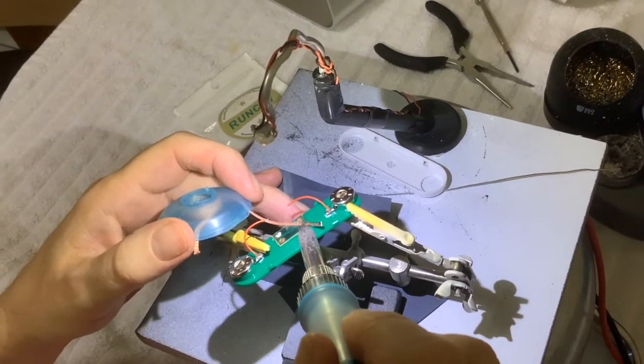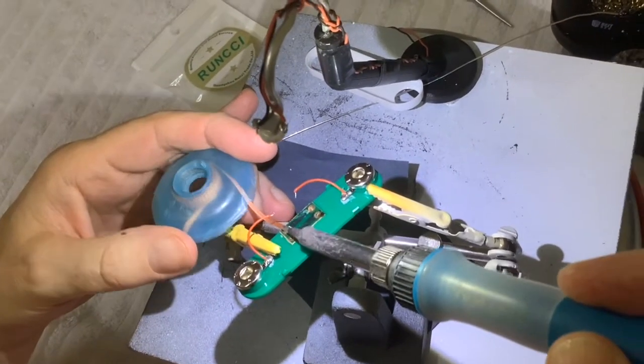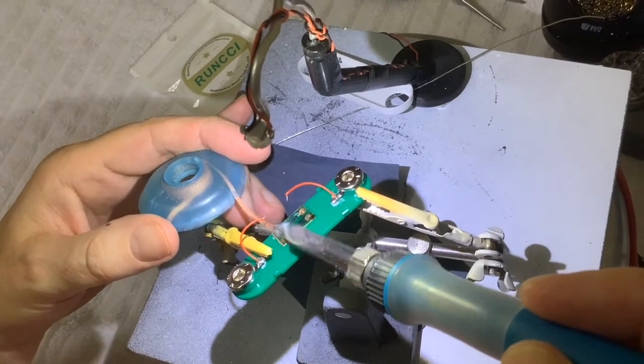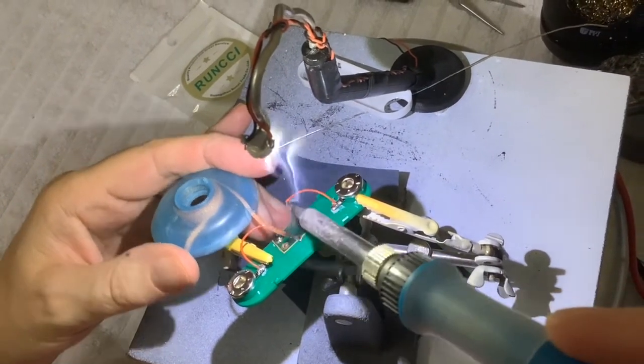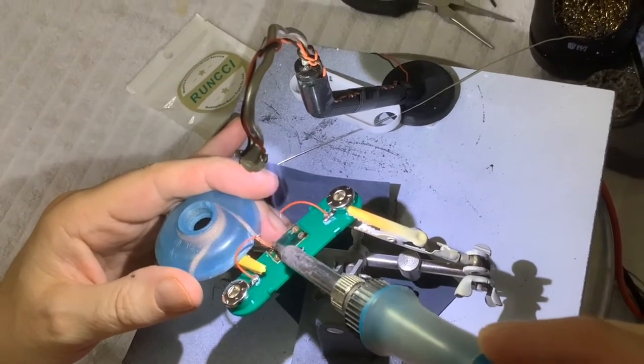Solder wick it's called - because it sort of wicks it up. We could just pull the switch off with pliers because we don't want it, but doing this method means it'll come off without damage and just makes a neater job.